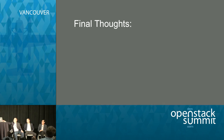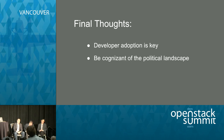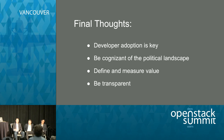Final takeaways: developer adoption is key — start that conversation and evangelism early and be diligent throughout. Be cognizant of the political landscape and pick your business partners wisely. Define and measure value: be crisp about what you expect to get out of the transition, be prepared to measure it, and be transparent — good or bad. If there's a general feeling things aren't going well, you need to address where it's not going well and what the plan is to get through it.